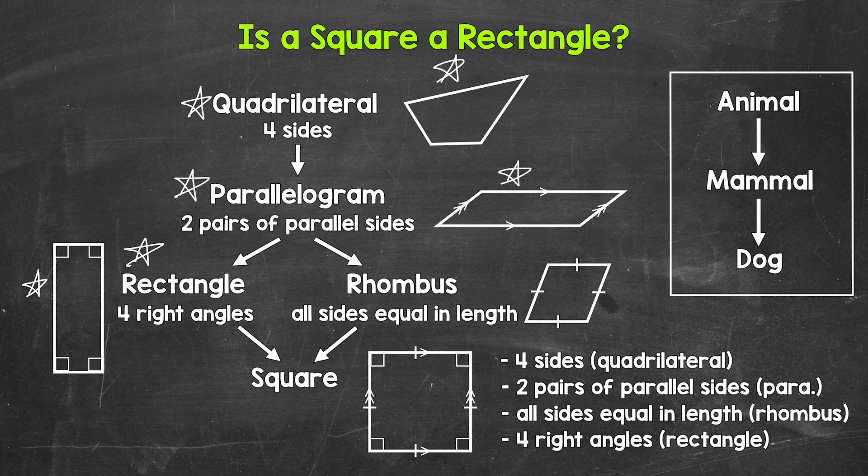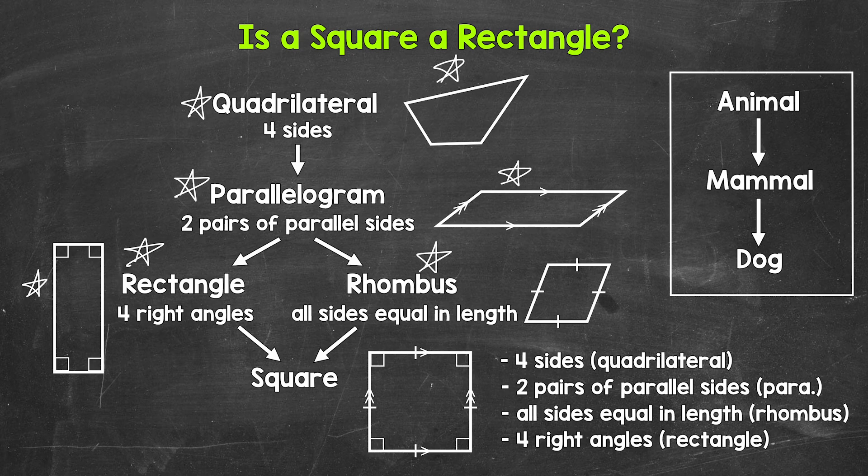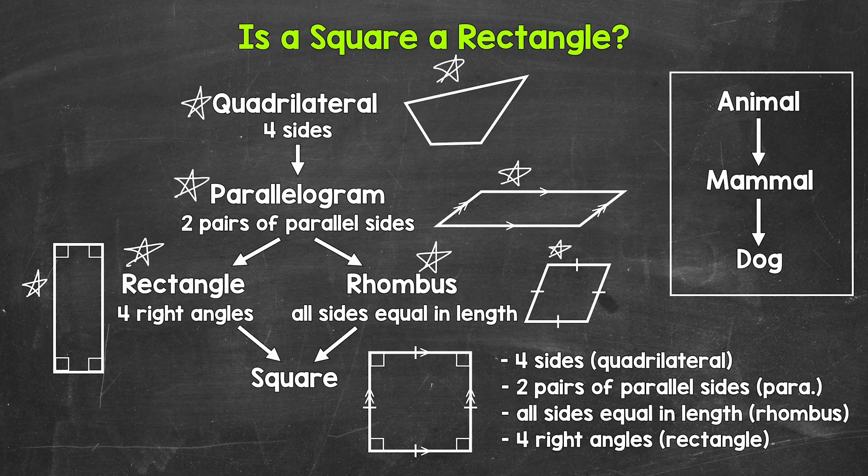Let's go over to the right from parallelogram to rhombus. Just like a rectangle, a rhombus is a more specific or special quadrilateral and parallelogram. A rhombus is a quadrilateral and a parallelogram. But more specifically, a rhombus has to have all four sides equal in length. And we have an example of a rhombus right here. Those tick marks on each side tell us that each side is the same length.